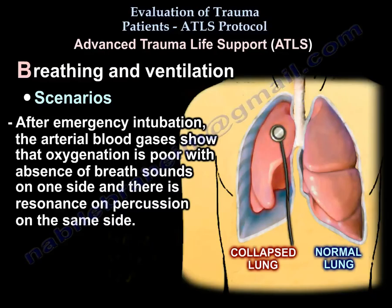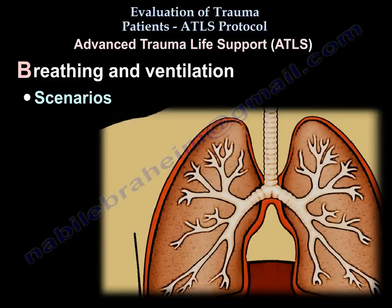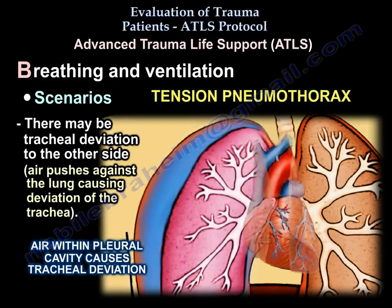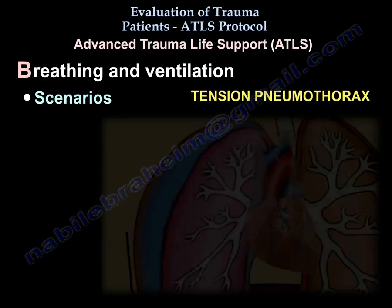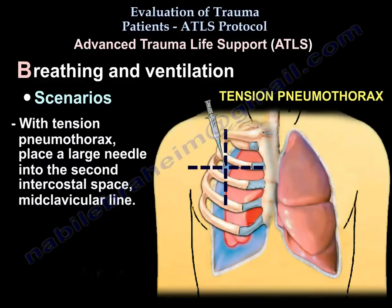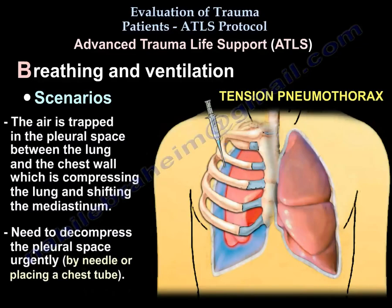With absence of breath sounds on one side, resonance on percussion on the same side, and possibly tracheal deviation to the other side — this is a tension pneumothorax. You will place a large needle in the second intercostal space at the mid-clavicular line. Air is trapped in the pleural space between the lung and chest wall, compressing the lung and shifting the mediastinum. You need to decompress the pleural space urgently, either by needle or chest tube.